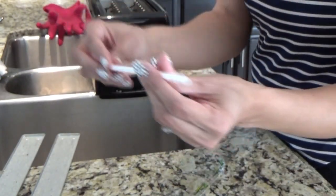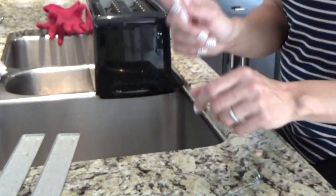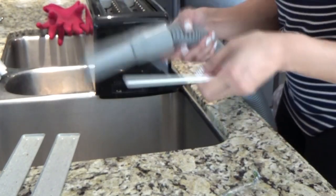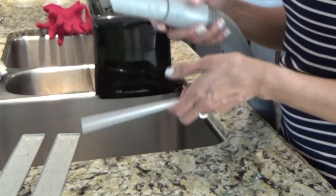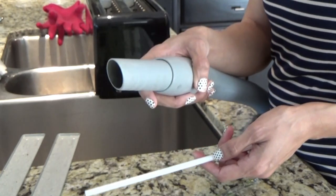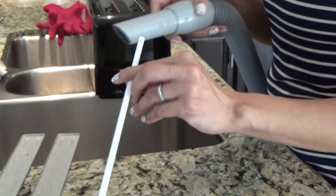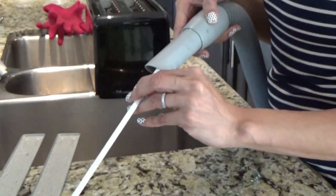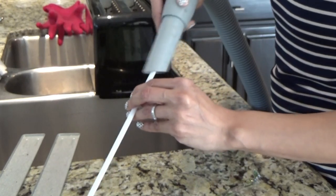So we will need a straw and a vacuum. I can't be the only one who has this problem, okay? So you get your vacuum. We're gonna hold the straw in with one hand, and the other hand we're gonna get the vacuum hose.